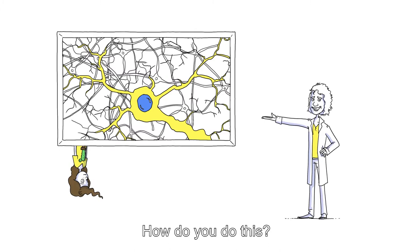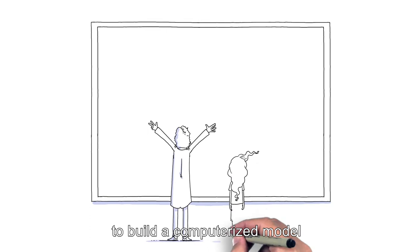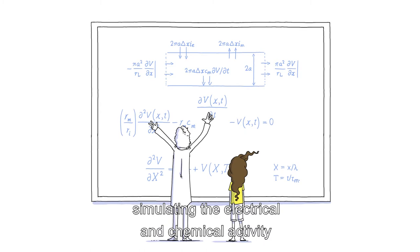How do you do this? Our approach is to use physical principles to build a computerized model made entirely of mathematical equations, simulating the electrical and chemical activity that takes place in the real biological brain.